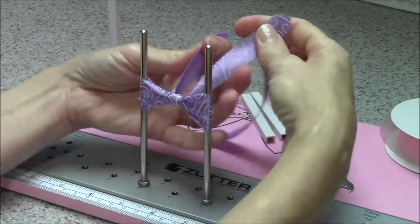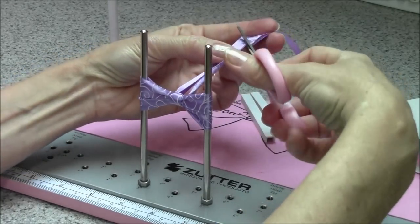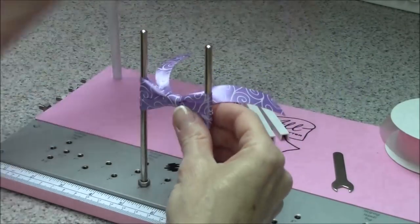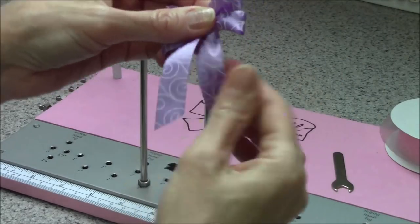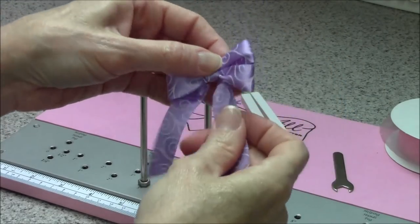Tighten it up as much as you can, clip your tails and slide the bow off, and there's your little double bow with the figure eight.